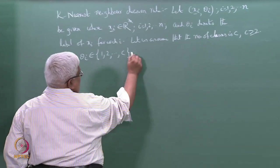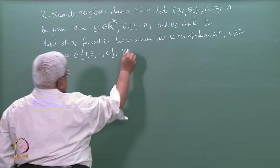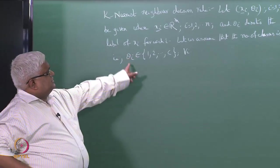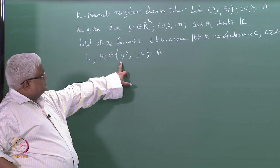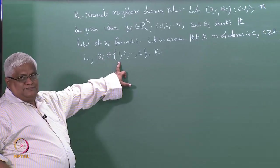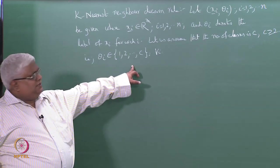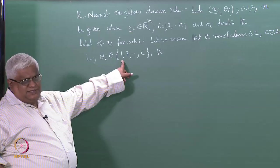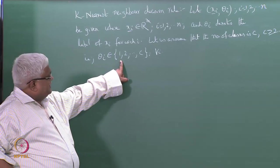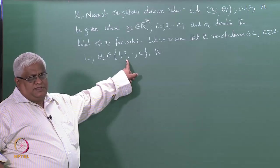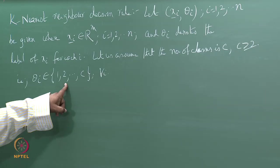For all i, theta i can take values from this set {1, 2, ..., c}. Theta i equal to 1 means xi has come from class 1; theta i equal to 2 means xi has come from class 2, and so on.